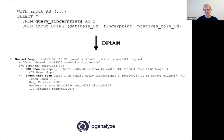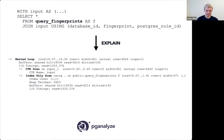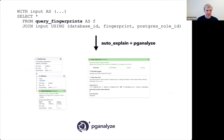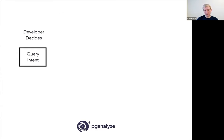EXPLAIN and query plans help us understand what each query is actually doing. The query text is what we tell the database to do, but what the database actually does is represented by the query plan. In pganalyze, for example, we also visualize this. We'll talk more about how we use auto_explain to show you these plans automatically.